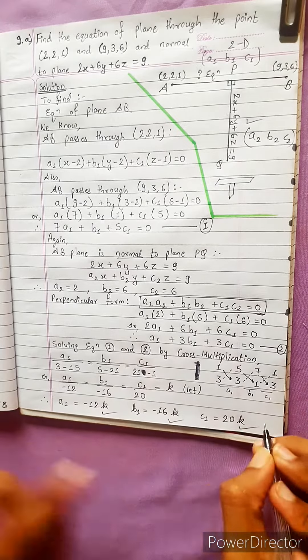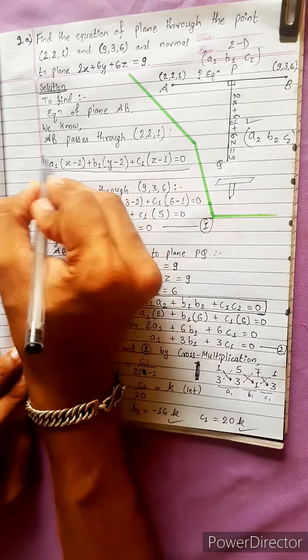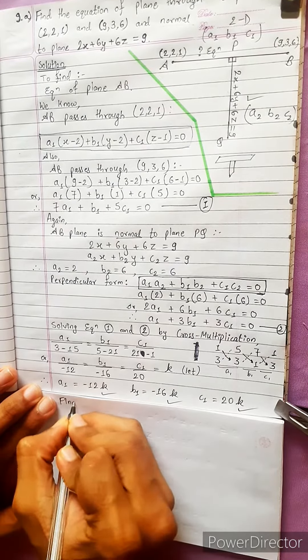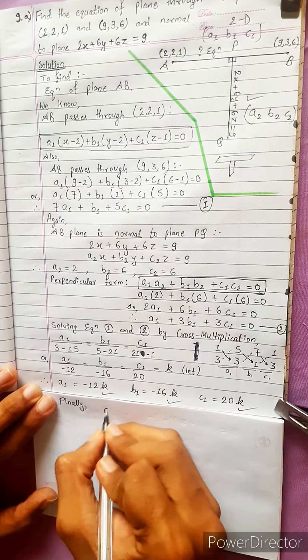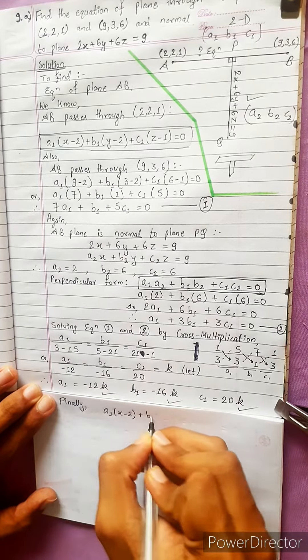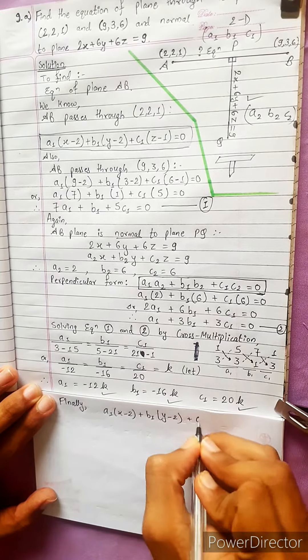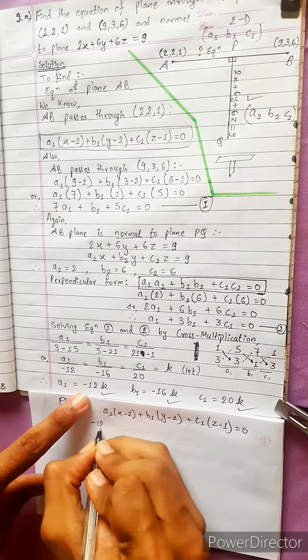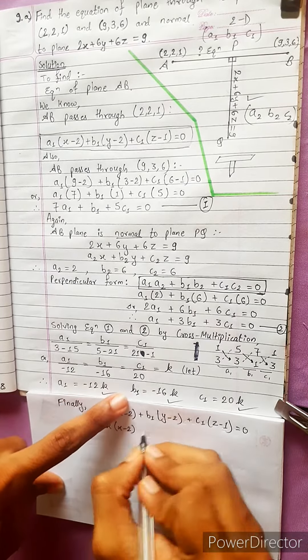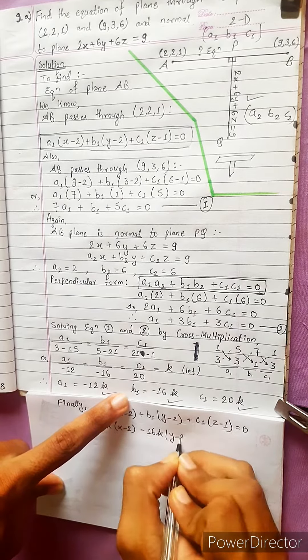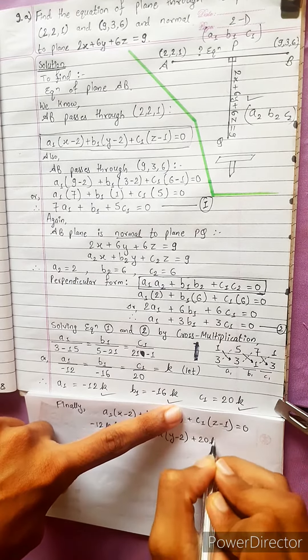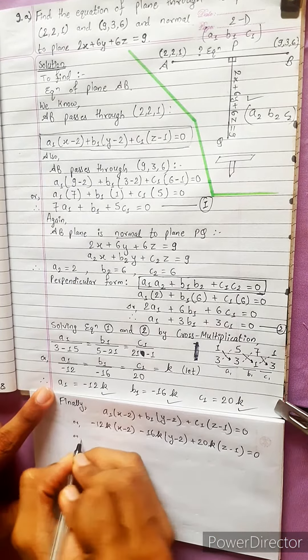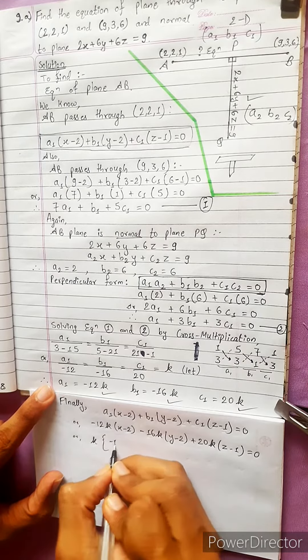Now putting these values: A1 which is -12K times (x - 2), plus B1 which is -16K times (y - 2), plus C1 which is 20K times (z - 1) equals 0. Taking K common.